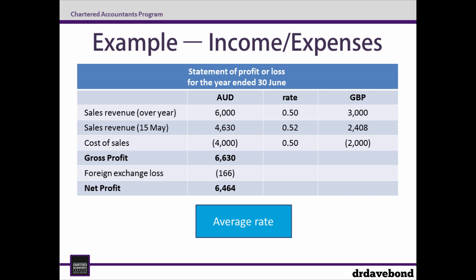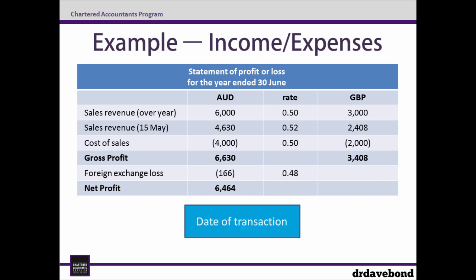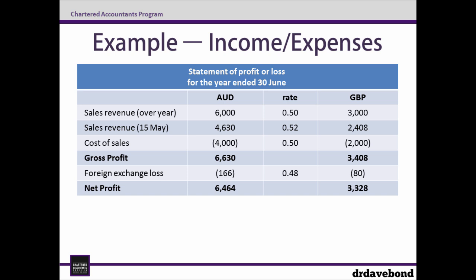It's important to note that for any subtotals — and gross profit is the first that we've seen — you don't translate this line; you just use the same addition or subtraction that you used in the functional currency. If you're using a spreadsheet, it's simply a matter of copying the cell formula across. So 3,000 plus 2,408 minus 2,000 gives a gross profit of £3,408. The foreign exchange loss was determined on the 30th of June, so we have a date for the expense item and use the exchange rate for the 30th of June. Net profit is a subtotal and, based on the lines above, we end up with a £3,328 net profit for the year. This number is important for later on, so it's handy to make a note of it.